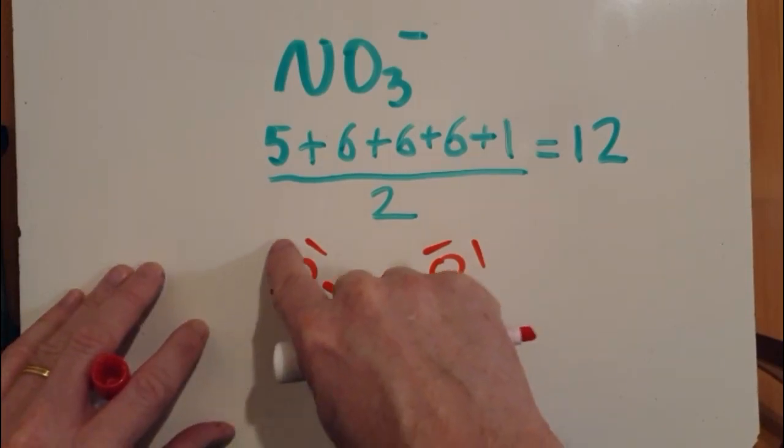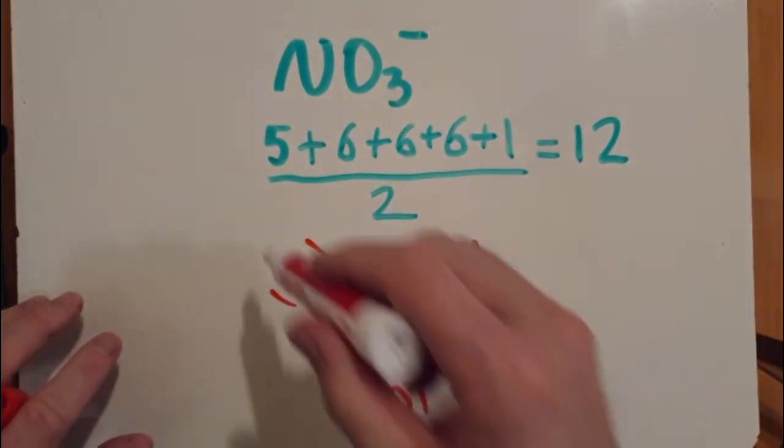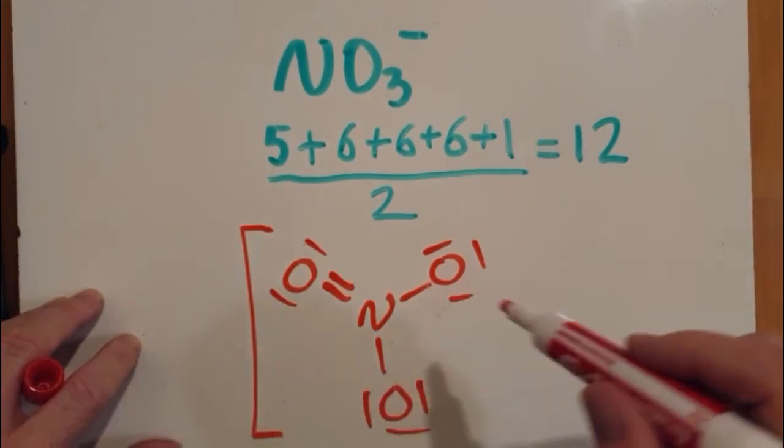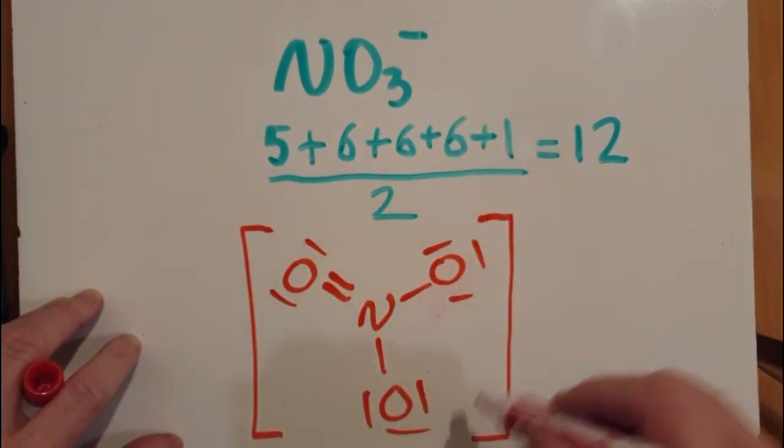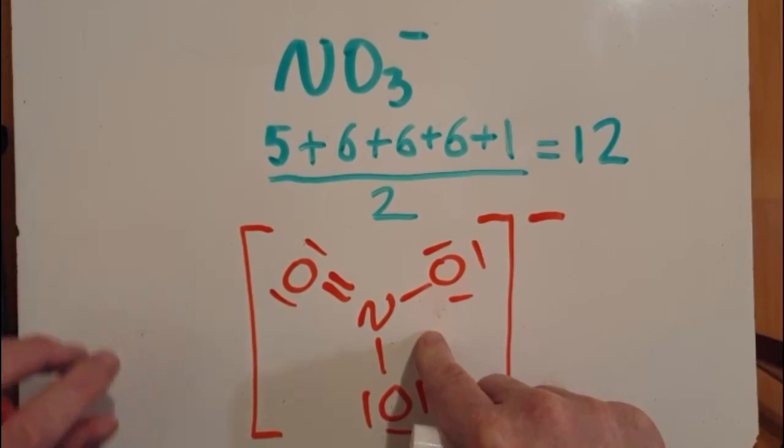So you can fix it just simply there. By convention, we put square brackets around the ions and the charge, and that is the Lewis structure for the nitrate ion.